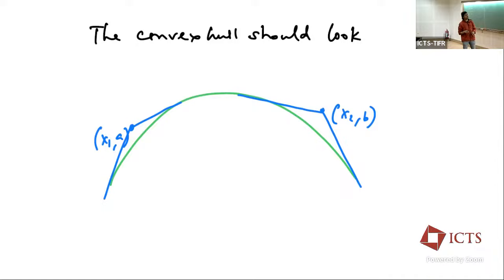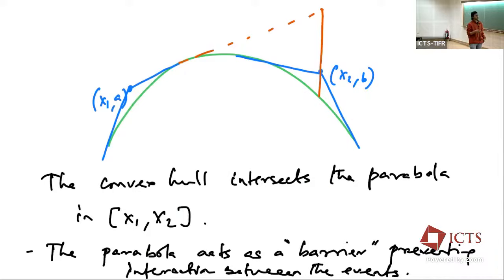You should think of the parabola as acting as a barrier between these two events, making them independent. If you want two points at heights A and B and you draw the convex hull, if the straight line between the two points intersects the parabola, there is a parabolic segment acting as a barrier and FKG is sharp. If the height at X2 was above this point so that the two points have a straight line not intersecting the parabola, then FKG will not be sharp.